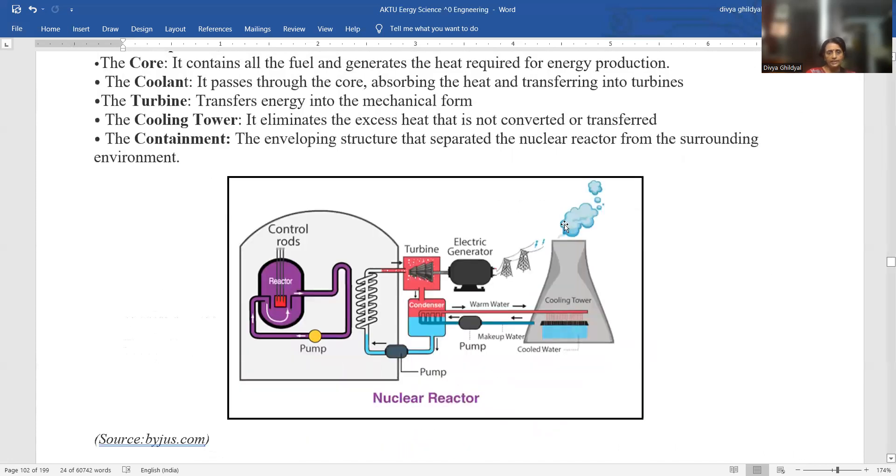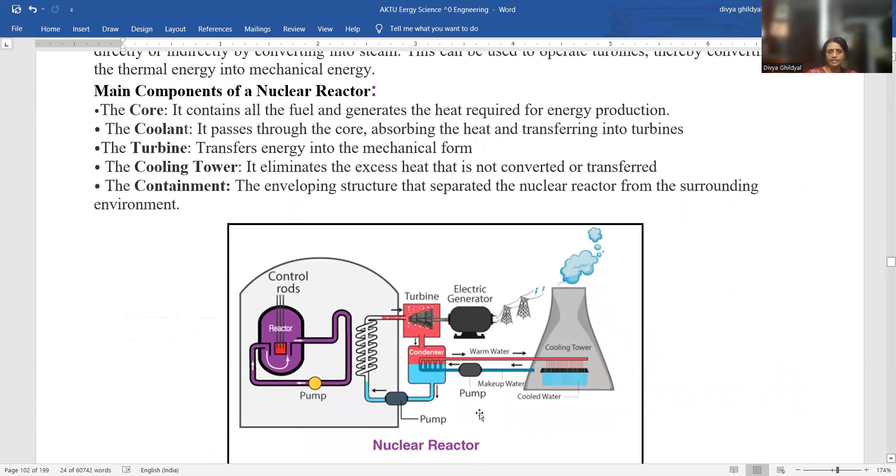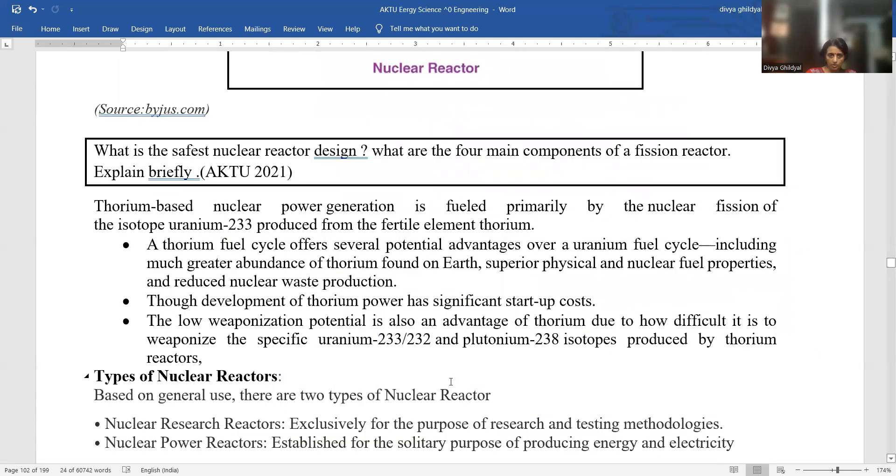Now you see this is the diagram of a nuclear reactor. It is consisting of nuclear reactor core, consists of the fuel and generates the heat required for energy production. Coolant passes through the core, absorbing the heat and transferring into turbines. Turbine transfers energy into mechanical form. Cooling tower eliminates the excess energy that is not converted or transferred. Containment, the enveloping structure that separated the nuclear reactor from the surrounding environments. This question has been asked in your AKTU paper. It was a 10 mark question.